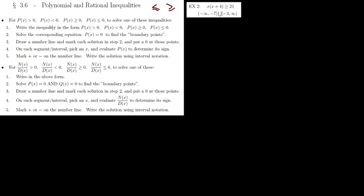Let's start with our first polynomial example: x times (x + 4) is greater than or equal to 21. We want to solve that inequality. Step one is to rewrite the inequality in the form where you have some polynomial p either greater than, less than, greater than or equal to, or less than or equal to 0.